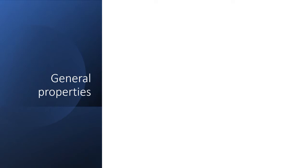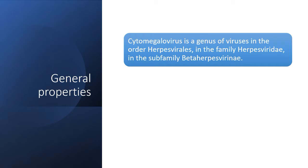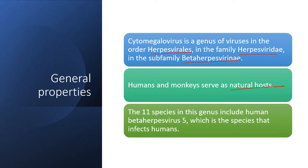What are the general properties of this virus? Cytomegalovirus is a genus of viruses in the order Herpesvirales, in the family Herpesviridae, in the subfamily Betaherpesvirinae. Humans and monkeys serve as their natural hosts. There are 11 species in this genus, including human betaherpesvirus 5, which is the species that infects humans.